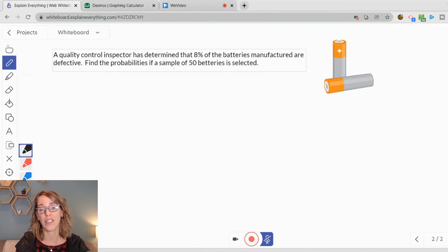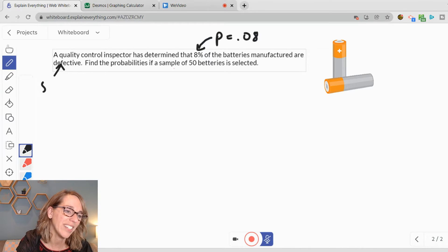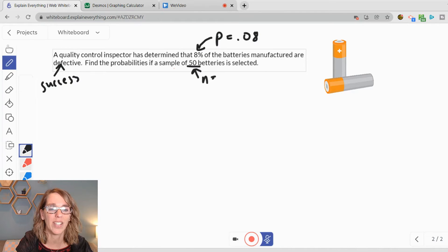First of all, we can tell that this is a binomial probability. I've got a consistent probability of a success, which is going to be P. I also have a very clear outcome, whether it's going to be a success, which would be defective, and an outcome of a failure, which in this case is kind of counterintuitive, but a failure would be not defective. We have a clear number of trials, so n is equal to 50, and each of those trials are independent.